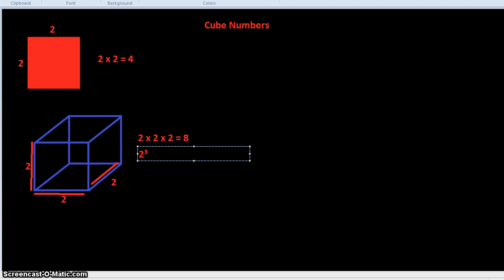And we use that little 3 to represent the 3 forms of 2. So with a square, when it's a little 2, you have 2 times 2. With a cube, you need 3 of those. So it's 2 times 2 times 2.